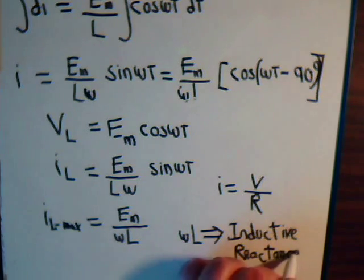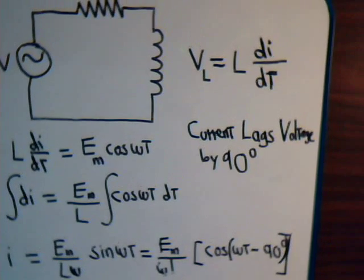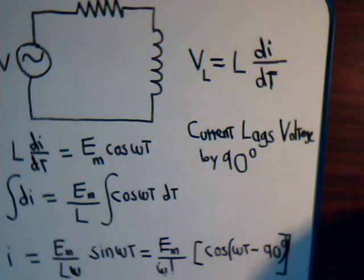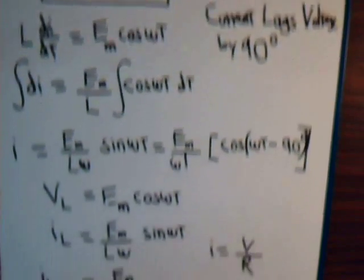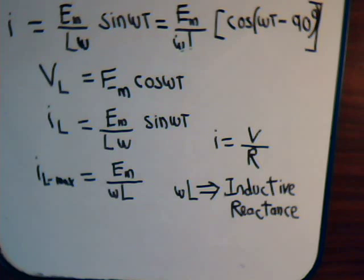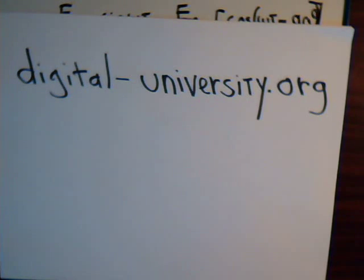This is where inductive reactance comes from, just by doing this simple analysis. With the inductor, the current lags behind the voltage by 90 degrees, or conversely, the voltage leads the current by 90 degrees. And omega L is the inductive reactance. This is video number 80 in our electrical circuit series, and the full playlist is available at digital-university.org.